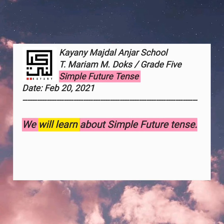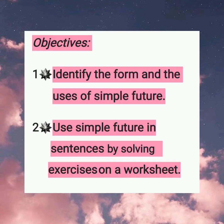Look at the highlighted words: 'we'll learn.' We'll learn is the main idea of today's story. Now let's read the objectives. We are going to identify the form and the uses of simple future. And then we will use simple future in sentences by solving exercises on a worksheet.